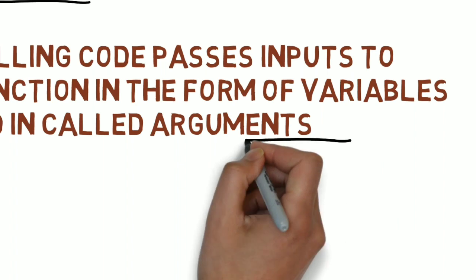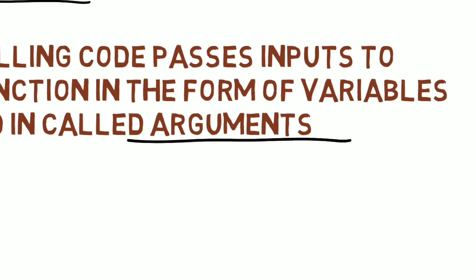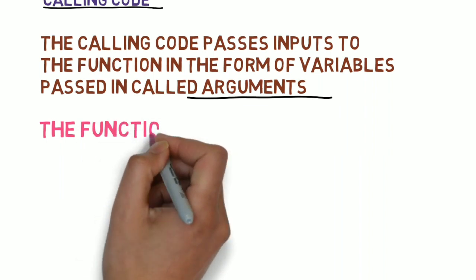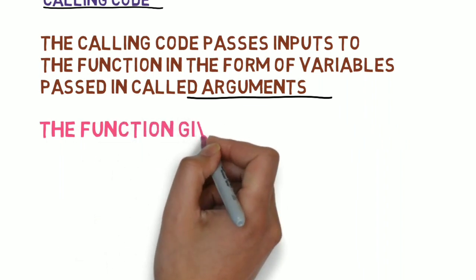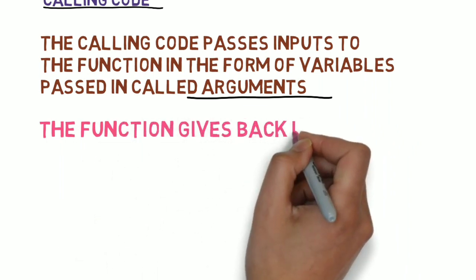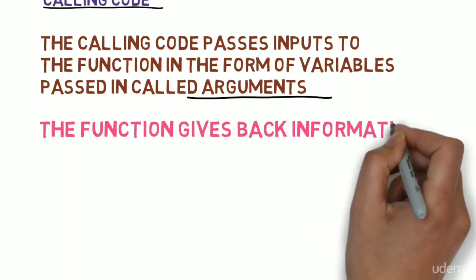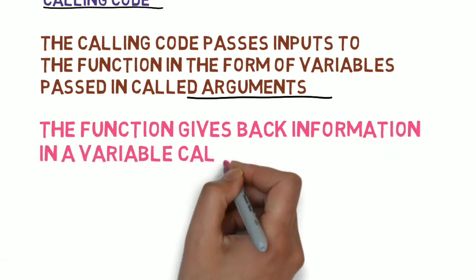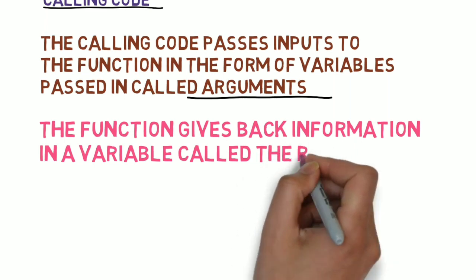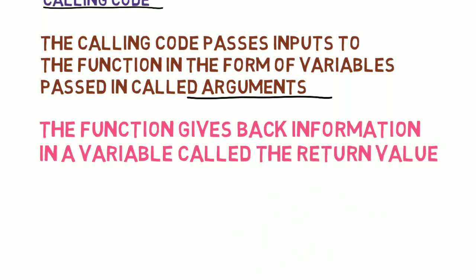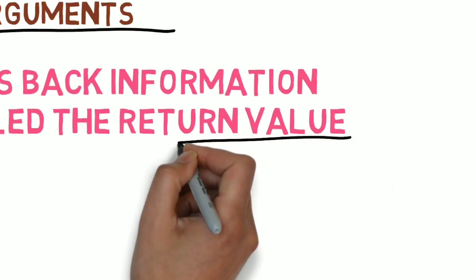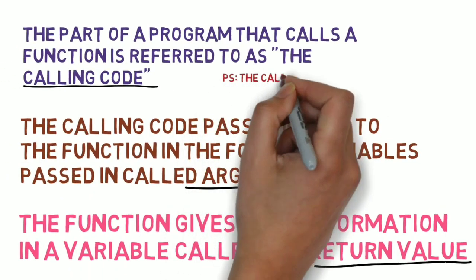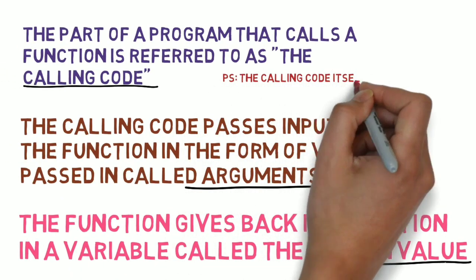A function will give an output back to the calling code in the form of a variable, which is known as the return value. So the function takes in inputs which are arguments, processes them and returns a value to the calling code.